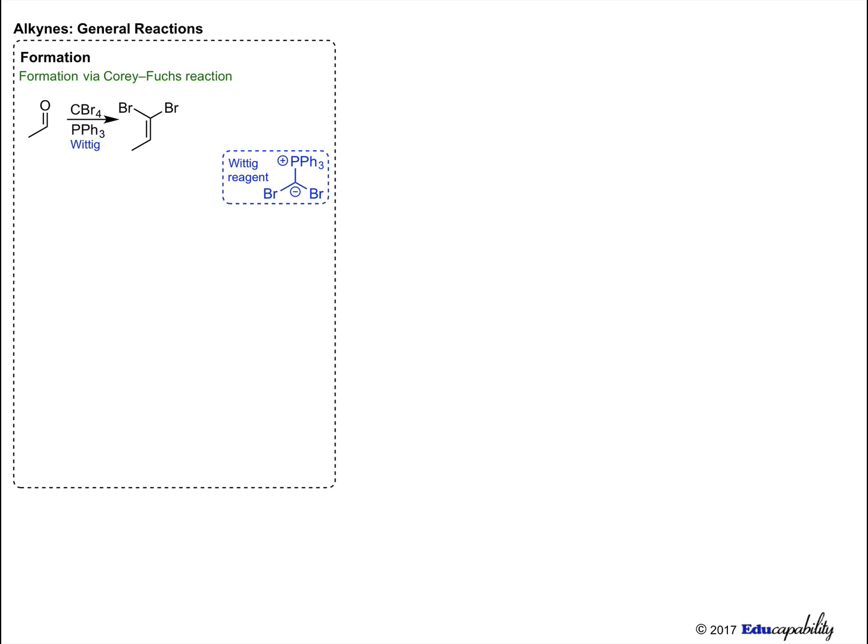The dibromoalkene is subsequently treated with the strong base n-butyllithium to cause an elimination reaction, forming the alkyne after treatment with water.